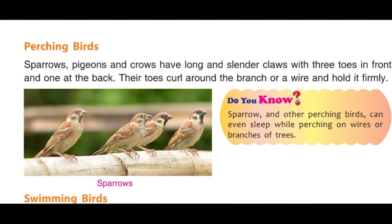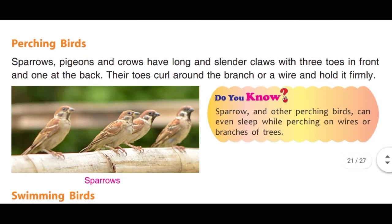Perching birds: Sparrows, pigeons, and crows have long and slender claws with three toes in front and one at the back. Their toes curl around a branch or wire and hold it firmly. Yeh jahan bhi baithe hain, unke toes use curl karke achhe se mazbooti se pakad lete hain, aur unhe taar ya kisi branch par baithne mein madad karte hain.